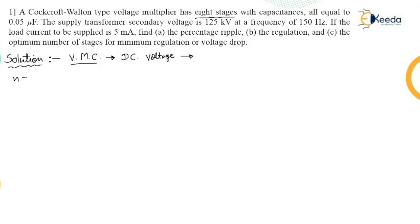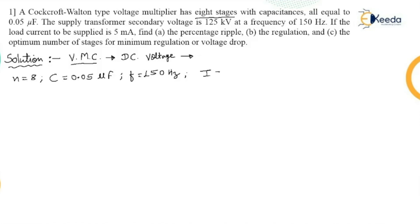Let us write down the given quantities. N equals 8. All capacitances are equal to 0.05 microfarad, so C equals 0.05 microfarad. The supply transformer secondary voltage is 125 kilovolt at a frequency of 150 hertz, so f equals 150 hertz. The load current to be supplied is 5 milliampere, so I equals 5 milliampere.